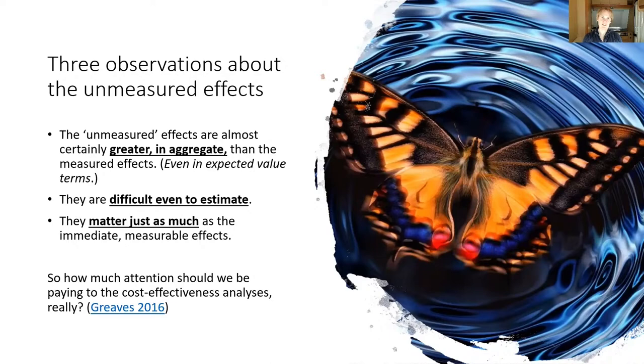Okay, so there are all these unmeasured effects not included in our simple cost-effectiveness analysis. I want to make three observations about those unmeasured effects. Firstly, I'll claim here, and I'll say more about it in a minute, I claim that the unmeasured effects are almost certainly greater in aggregate than the measured effects. And I don't just mean ex post this is likely to be the case. I mean that according to reasonable credences, even in terms of expected value, the unmeasured effects are likely to dominate the calculation if you're trying to calculate even in expected terms all of the effects of your intervention.